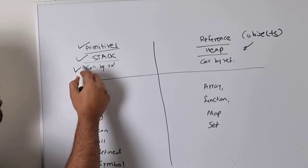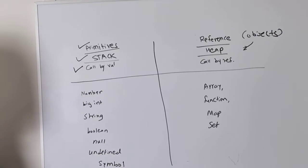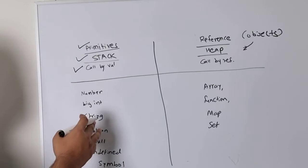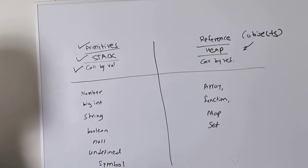Another difference is that primitives are passed by value. If you're calling a function and passing parameters, and if those parameters are of primitive type—like if you're passing a number, big int, string, or any of these types—then those values are passed by value. This means those values are copied to the function, and then the function call gets executed.